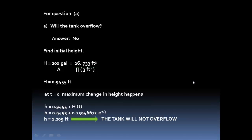Now we can answer the questions. The first question: will the tank overflow? The answer is no. First, we find the initial height due to steady-state accumulation: h = 200 gallons divided by the area. Converting to cubic feet, that is 26.733 ft³ divided by π(3 ft)², giving h = 0.9455 feet. That is the initial height due to the 200-gallon accumulation.